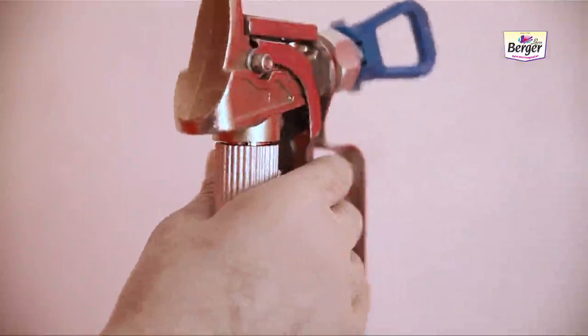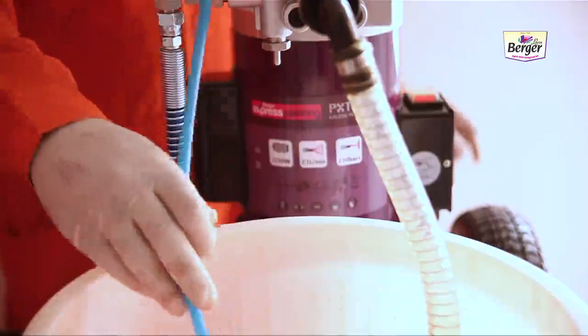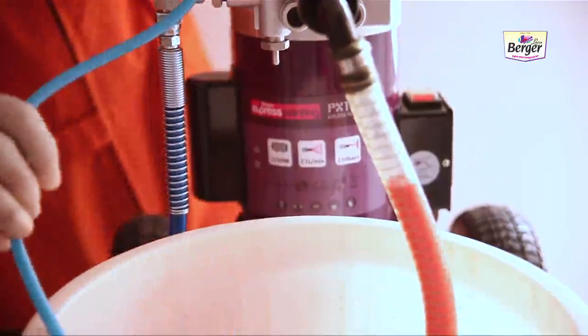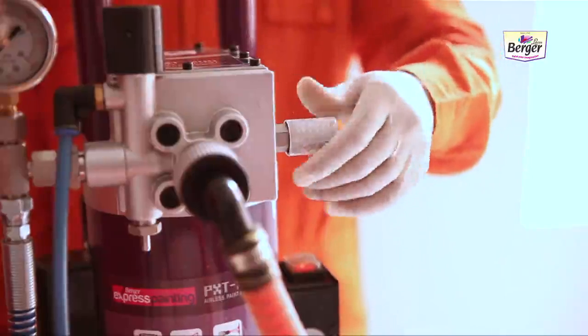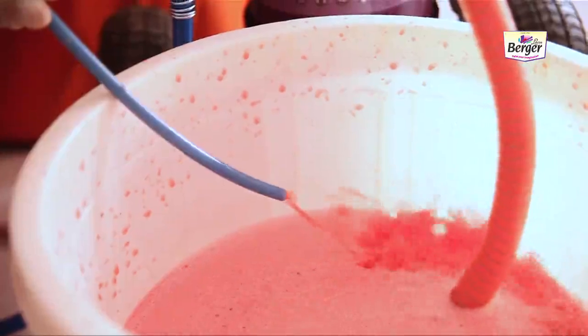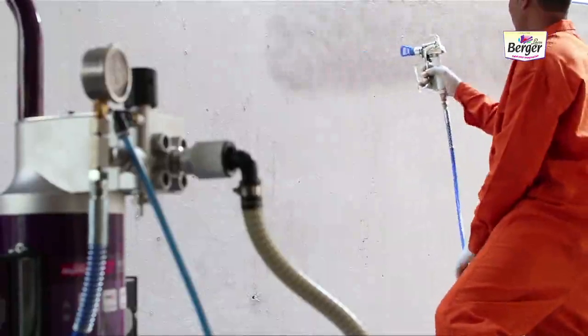Press button of air gun and keep pressure increasing until paint starts going up. Keep increasing pressure gradually until paint starts spraying evenly. Hold air gun straight with 1.5 feet gap from the wall.